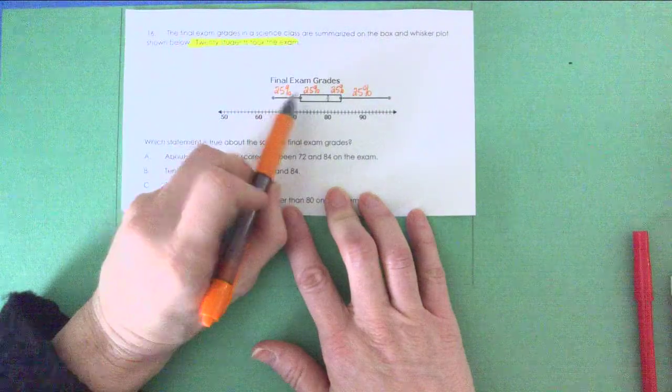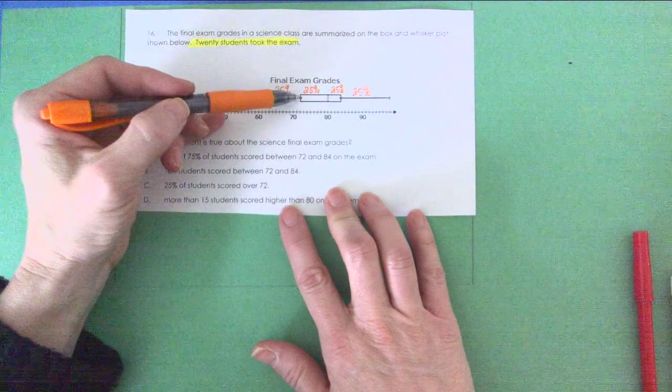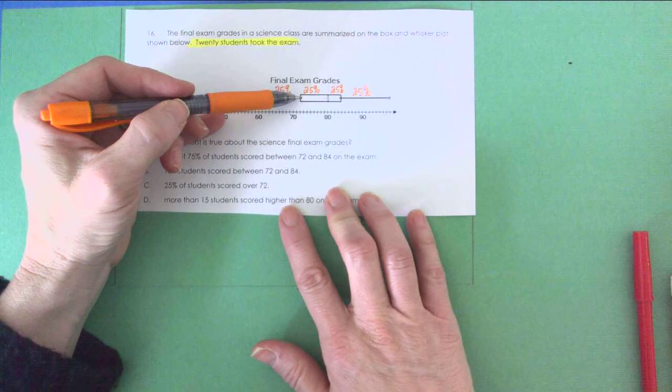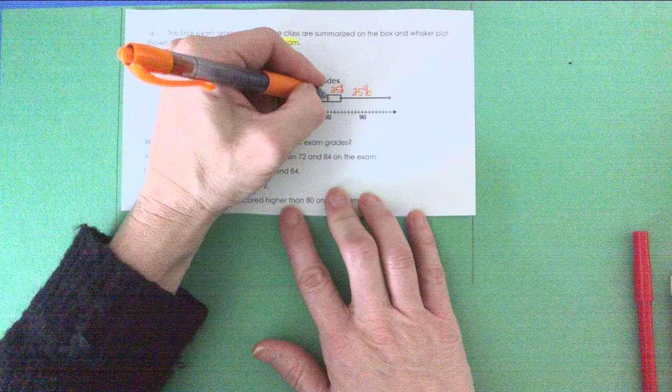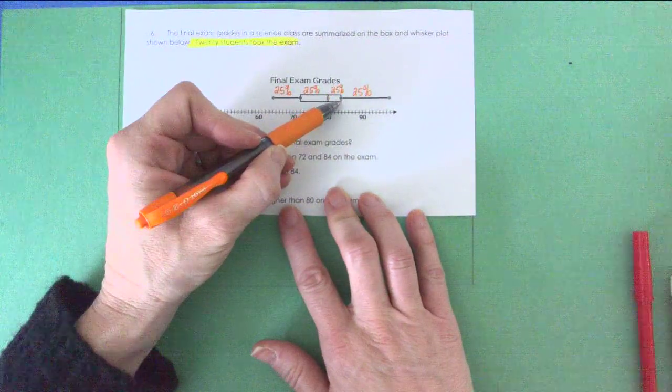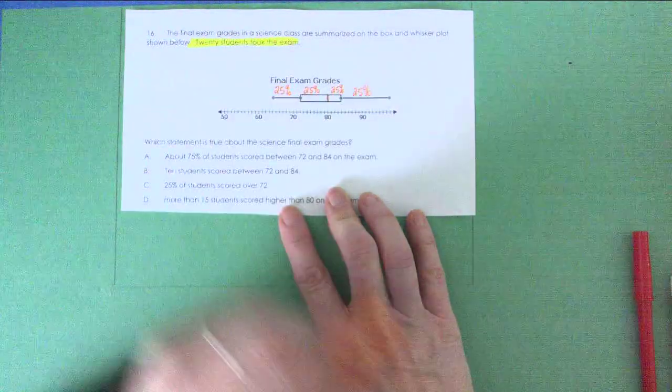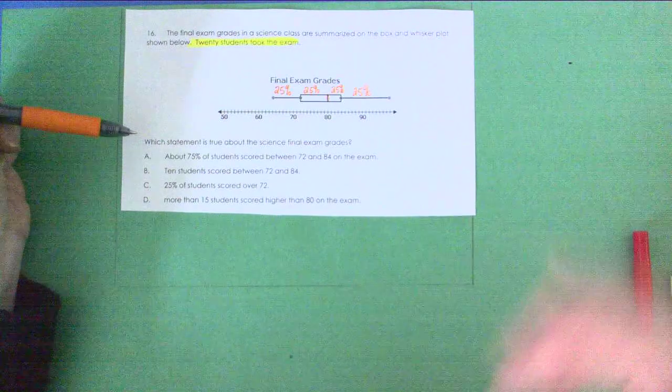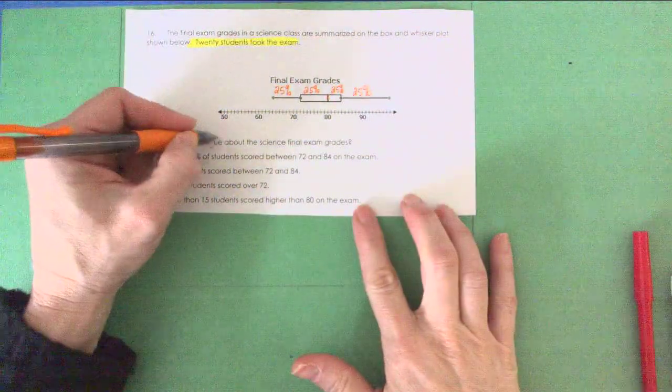So there's 25% of the data located between your minimum and quartile 1. 25% between quartile 1 and the median. Remember, this is your median. 25% between the median and the upper quartile or quartile 3, and 25% between quartile 3 and the maximum. So they want us to answer which statement is true. We're looking for the true statement.